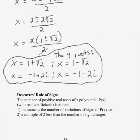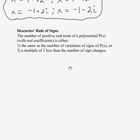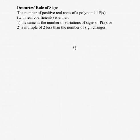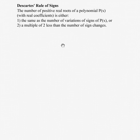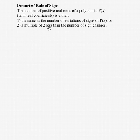Now we're going to introduce a couple more theorems. One is Descartes' Rule of Signs. It says the number of positive real roots of a polynomial p(x) with real coefficients is either the same as the number of sign changes — variations from addition to subtraction or subtraction to addition — or a multiple of two less than the number of sign changes.